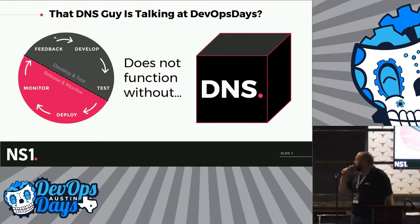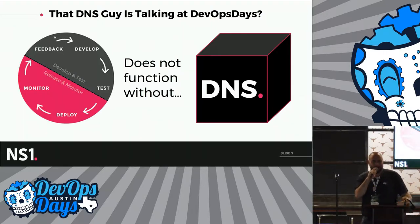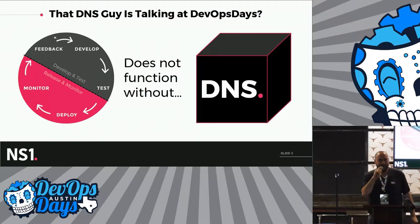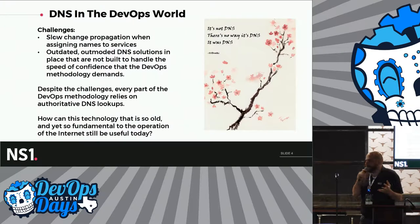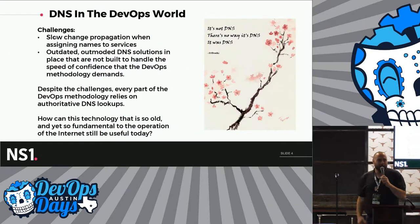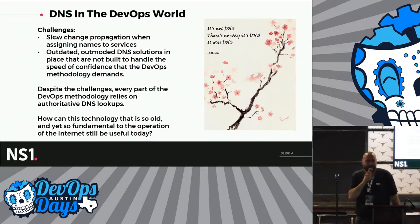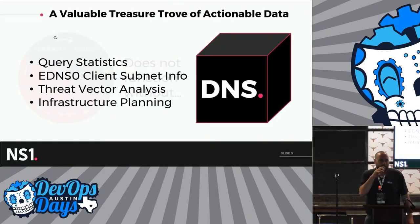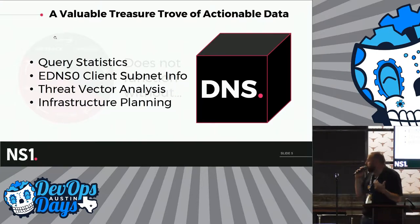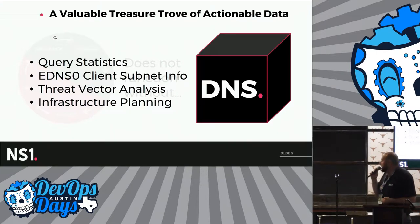Why is that DNS guy talking about stuff at DevOps Day? You can't automate, deploy, or do much of anything without a name attached to that resource that you're putting out there. A lot of the challenges we face — slow propagation time, outdated older technologies — are just not built for the speed of confidence that DevOps requires. Some of the information you're going to want to use out of the DNS are things like query statistics, eDNS zero client subnet information, threat vector analysis information, and infrastructure planning.